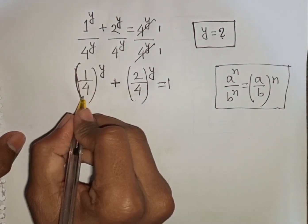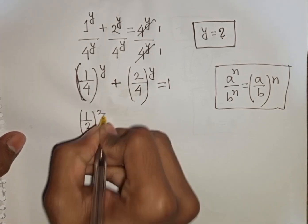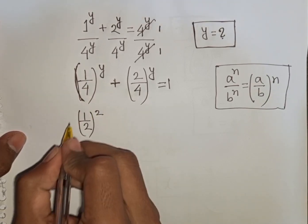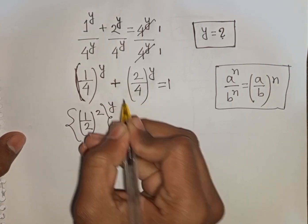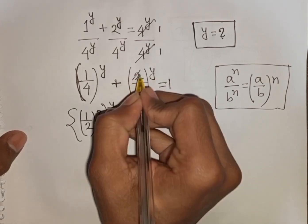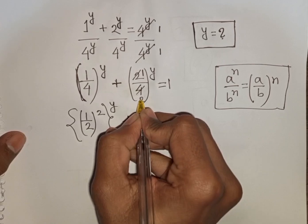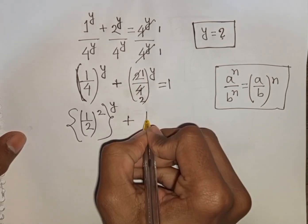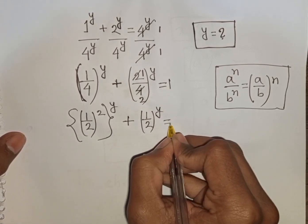Now 1 over 4 can be written as (1 over 2) squared, since 1 squared is 1 and 2 squared is 4. So the first bracket becomes (1 over 2) power 2, power y. And 2 divided by 4 is 1 over 2, so we have (1 over 2) power y plus (1 over 2) power y equals 1.